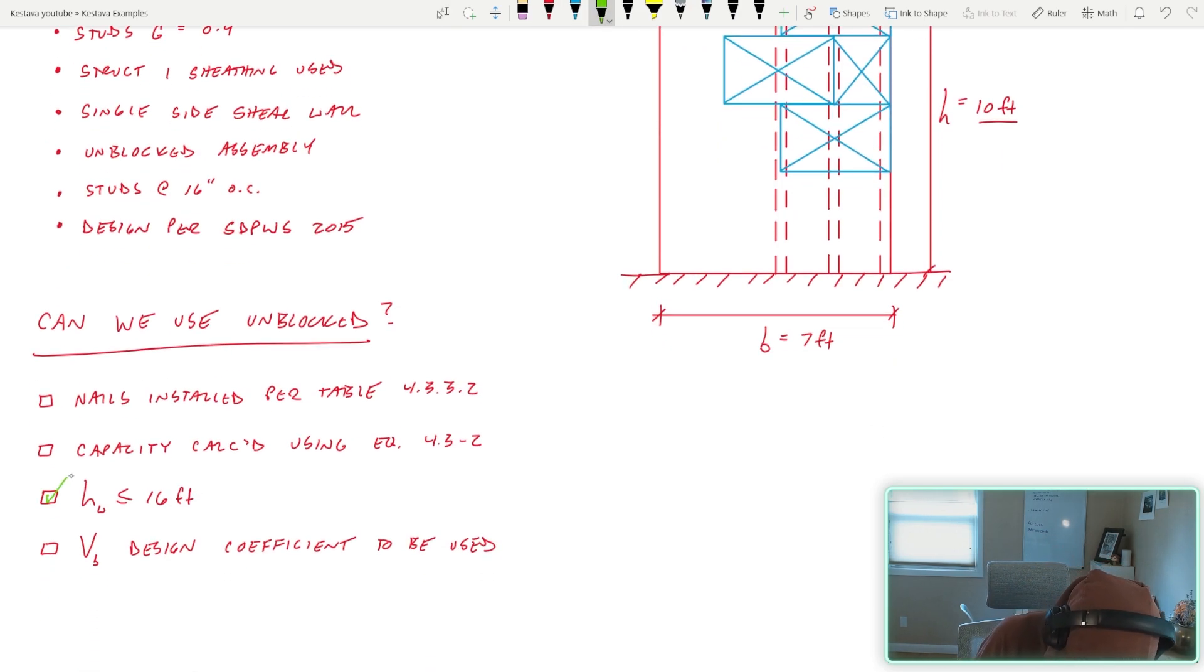And then V sub B design coefficient to be used. You'll see what that coefficient is within the equation. This literature is listed in the SPID WHIZ. I've just summarized it into this table here, so we'll be checking off those things as we move forward.